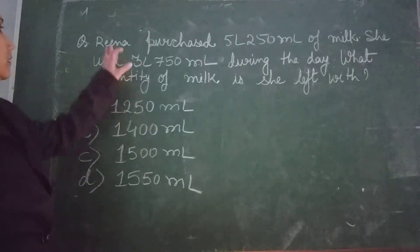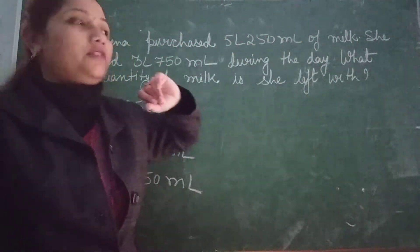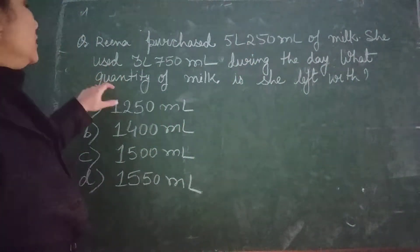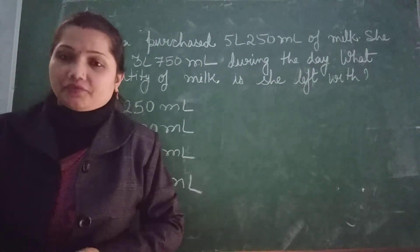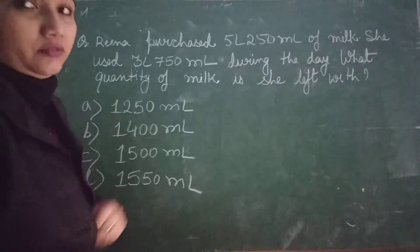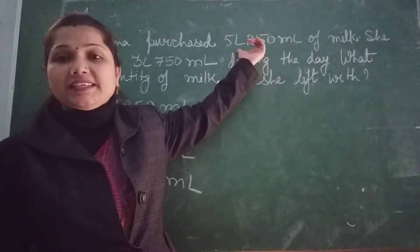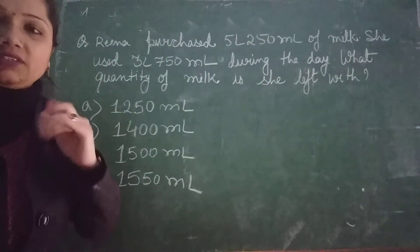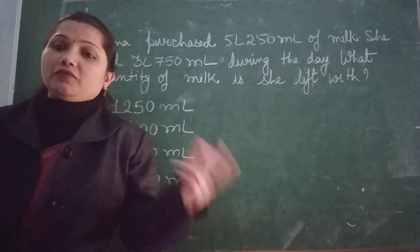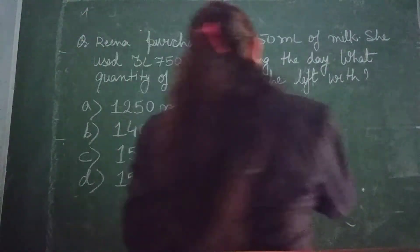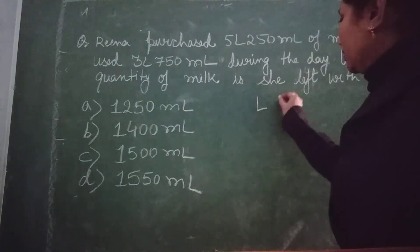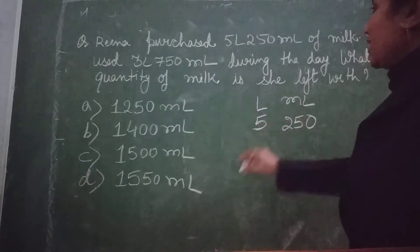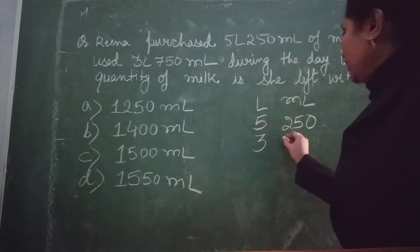Now the next question is a word problem. Reena purchased 5 litre 250 ml of milk. She used 3 litre 750 ml of milk during the day. So what quantity of milk is she left with? The total quantity of milk is 5 litre 250 ml and she used 3 litre 750 ml during the day. We will have to find out the remaining quantity of milk, so we will do subtraction.